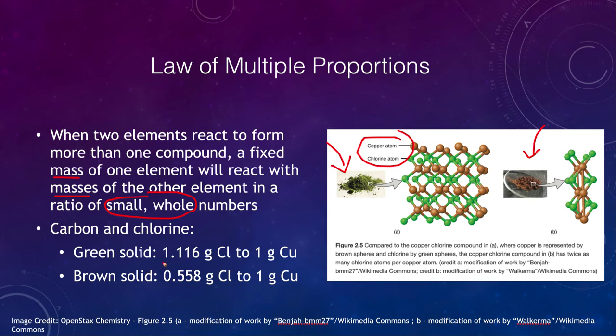And for example, in the green solid, you have 1.116 grams of chlorine. And in the brown solid, you have 0.558 grams of chlorine. And you may be able to guess that these are different by just a factor of two. So there is a factor of two between these for what we have for one gram of copper.